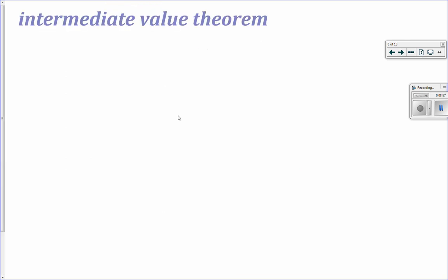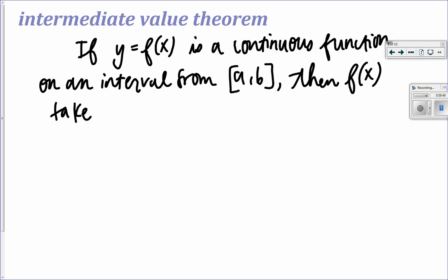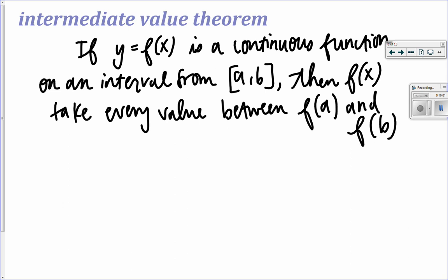All right, we got one more idea in this section. And it's something known as the intermediate value theorem. I'm going to show you what it is and then potentially later give you a couple examples to work on. But for right now, I'm going to write out the definition and then draw a picture. So the intermediate value theorem says if a function y is a function of x and it is a continuous function on an interval from a to b, then f of x, or the y values, take every value from or between f of a and f of b.